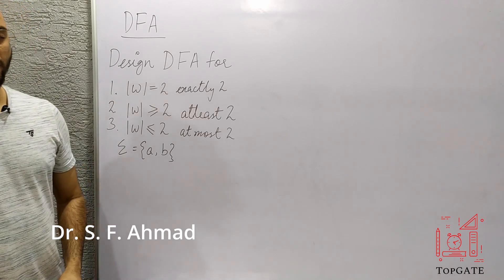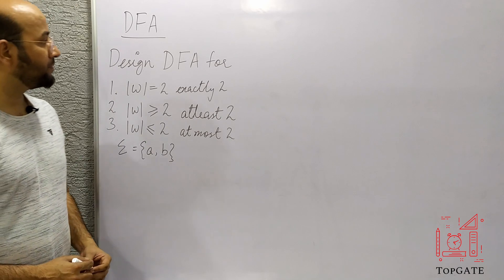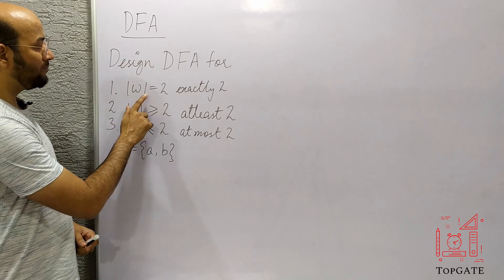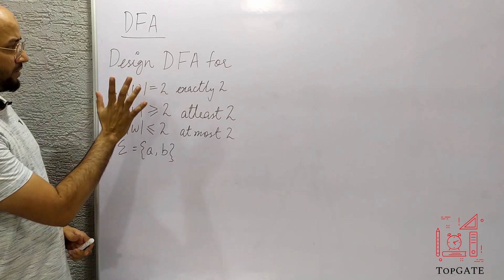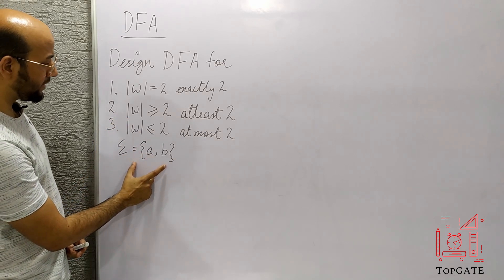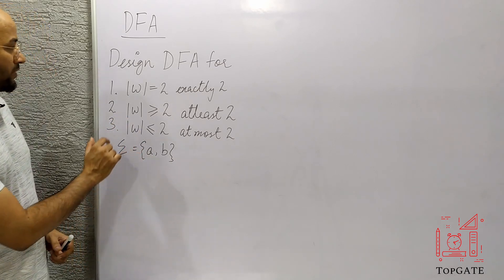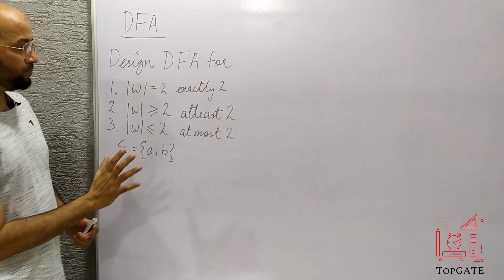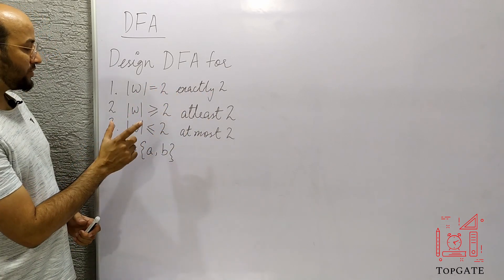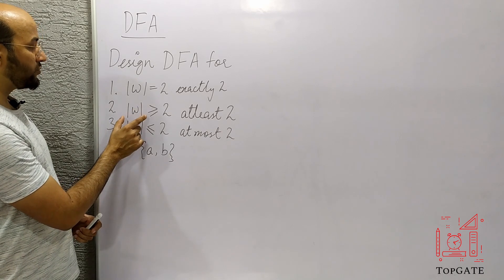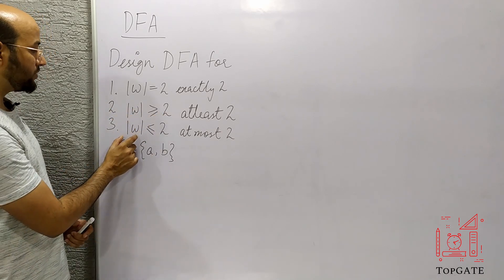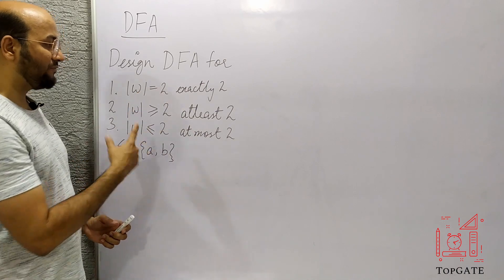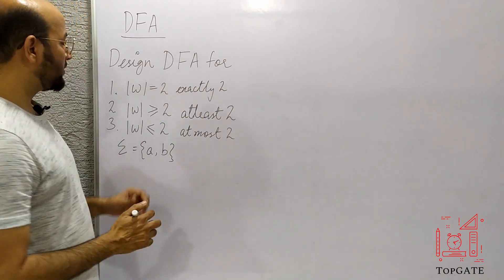Hello students, welcome to the channel Top Gate. In this video I will discuss some problems of DFA — designing a DFA for three languages. The first language is |w| = 2, where w is a string made up of {a, b}, so sigma is {a, b}. The second is strings of length at least two, and the third is strings of length at most two.